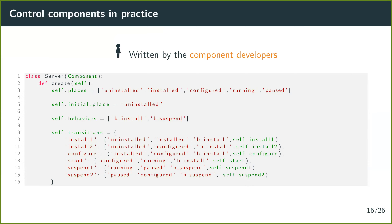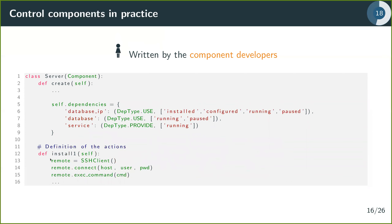Control components are straightforward to write; Concerto is implemented in Python. You create an object inheriting from the component class and declare places with string identifiers, the initial place, and behaviors — in this example 'install' and 'suspend'. Transitions are defined with an identifier, a starting place, a destination place, the associated behavior, and a function. The function performs concrete actions such as SSH connections or running commands. Finally, you declare dependencies: use ports and provide ports, each bound to a subset of the lifecycle.